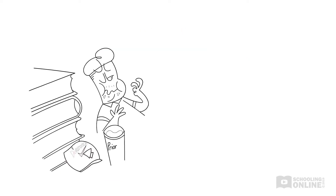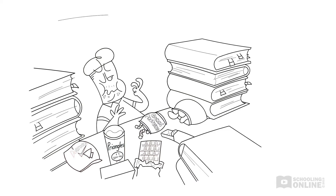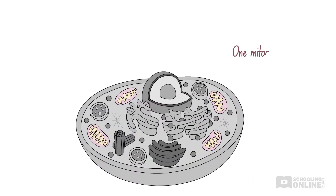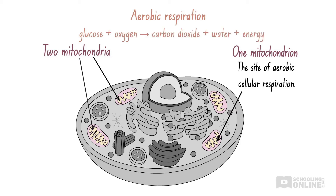Animals obtain glucose from the foods that they consume. For example, those study snacks that you like to eat contain useful glucose. Let's examine the organelle which processes this glucose. The mitochondrion is an organelle that is the site of aerobic cellular respiration. During aerobic respiration, glucose and oxygen react to form carbon dioxide and water, as well as energy that can be used by the cell.